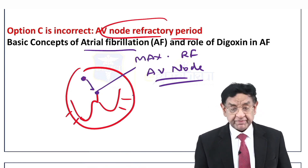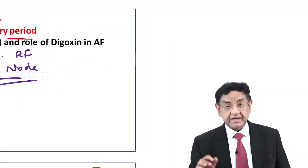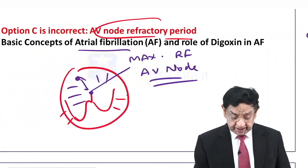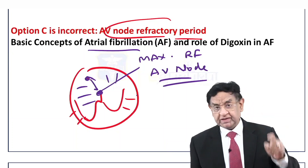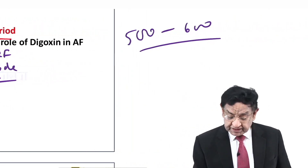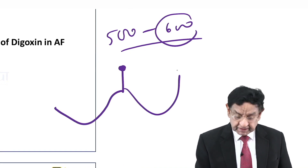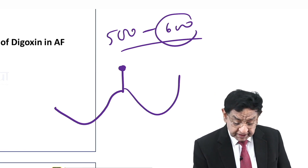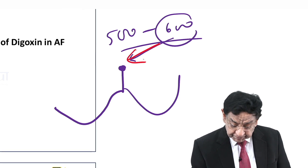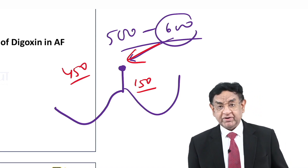In atrial fibrillation, impulses are coming from every part of the atria. There are at least 500 to 600 impulses coming to the AV node from various foci — multiple foci sending impulses to the AV node. Let's say 600 impulses reach the AV node. Out of 600, maybe 150 go down, meaning 450 are stopped at the level of the AV node.